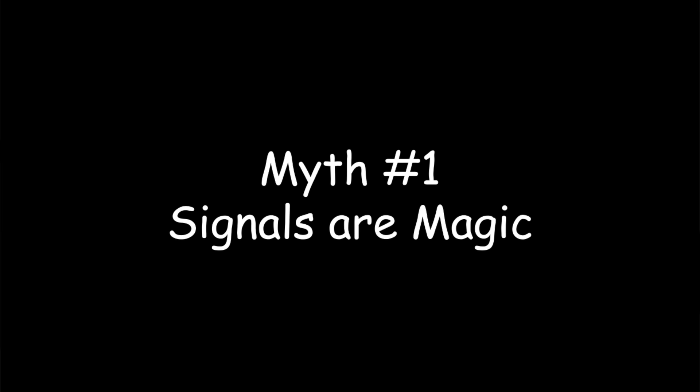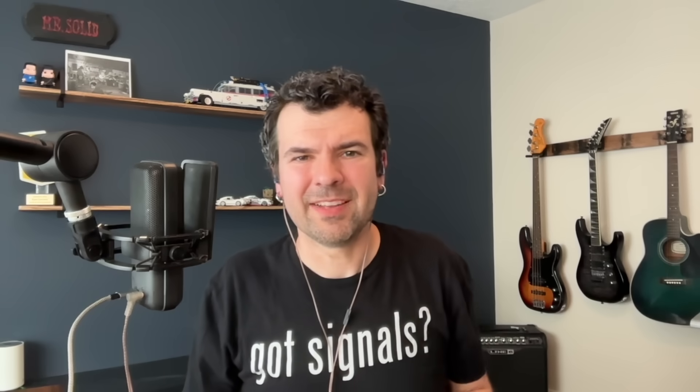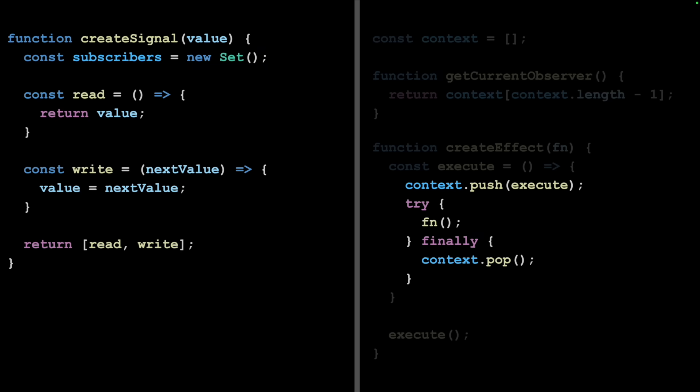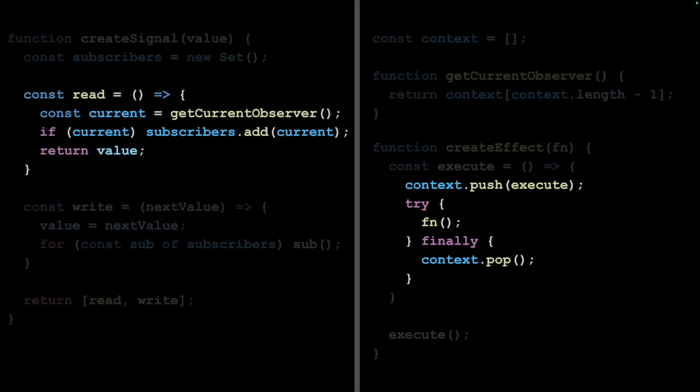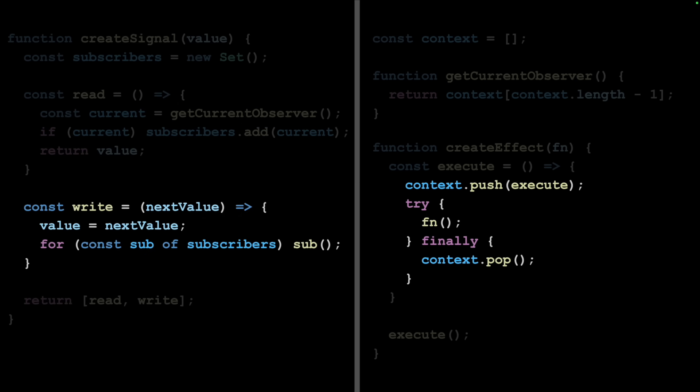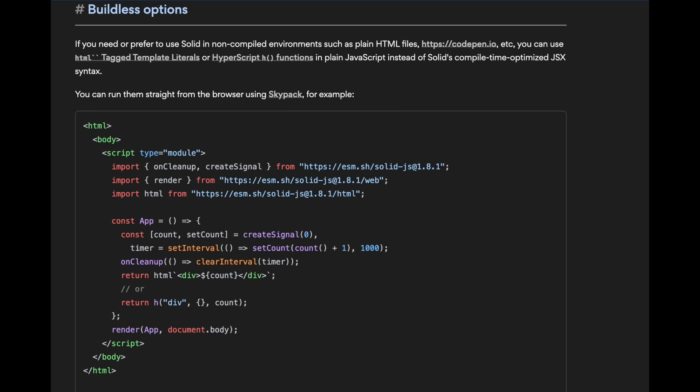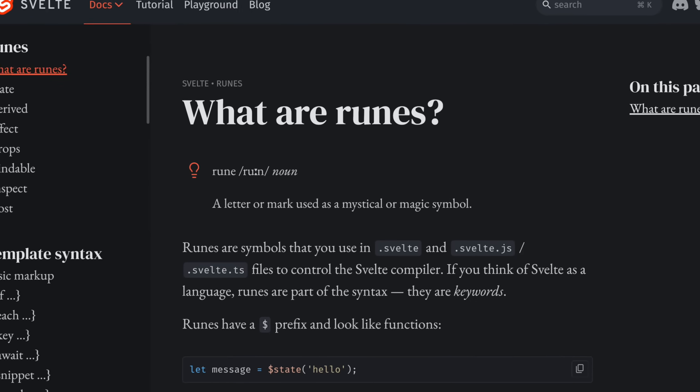Myth number one: signals rely on advanced compilation or magic. Signals are completely runtime and work without a compiler. Signals work by injecting tracking context into scope and then subscribing as the code runs; when the signals update, the subscribers will be notified and eventually rerun. It's definitely a system, but not one any more magical than anything else. While it is common to compile templates, that is not necessary. Signals work with tag template literals or even just directly with the DOM. There are nice benefits to using signals with a template compiler for ergonomics, which is why you see most frameworks use compilers for that. But so does React's JSX — it's just a well-known compiler adopted by more tools. It doesn't make it more or less magical. Some solutions also compile signals themselves, like Svelte's runes, for other perceived ergonomic gains, but that's in no way necessary.